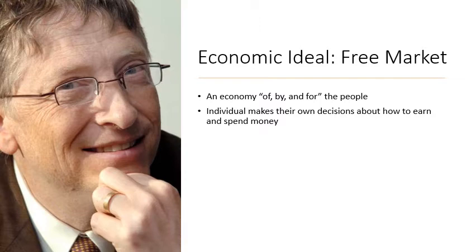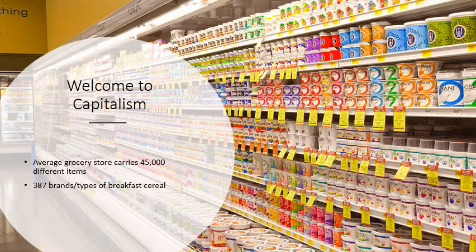The idea is the free market — it's your money, spend it how you want, start businesses. A big part of capitalism is the idea of choice. We live in a world of advertisements and options. The average grocery store carries 45,000 different items. There are 387 brands and types of cereal — that's one for each day of the year with some left over. There are tons of options, which can be overwhelming, but the idea is that you can spend your money on anything you want.